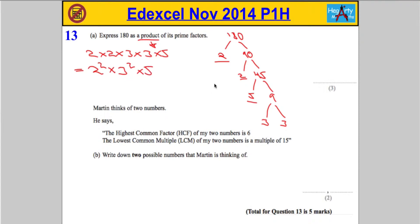Next part says Martin thinks of two numbers. He says the highest common factor of my two numbers is 6. He says that the lowest common multiple of my two numbers is a multiple of 15. Write down two possible numbers that Martin is thinking of. Now, in order to do this one, to explain it, I'm going to use a Venn diagram.